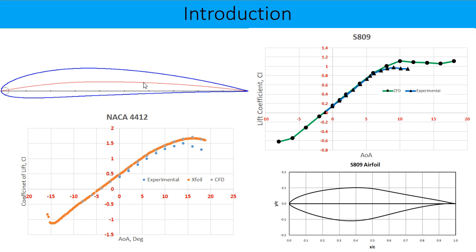If you look at the NACA4412 and the S809 aerofoil shape profiles, you can observe that the lift coefficient is increasing with the angle of attack for the NACA4412. But for the S809 it is almost constant at higher angles of attack, from about 5 degrees up to 15 or 18 degrees, which is the behavior required by wind turbine applications and the reason this aerofoil was designed.